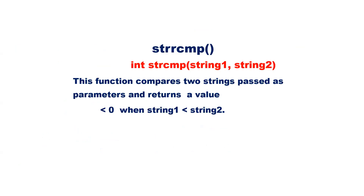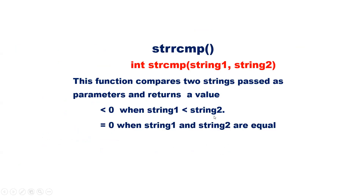Next is strcmp. The function compares two strings passed as parameters and returns a value less than zero when string one is less than string two, returns a value equal to zero if both strings are equal, and returns a value greater than zero when string one is greater than string two.